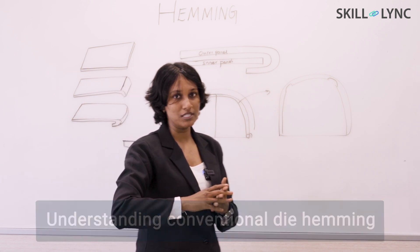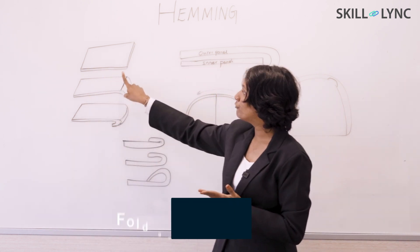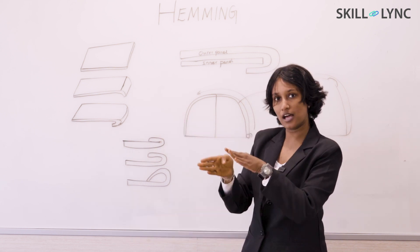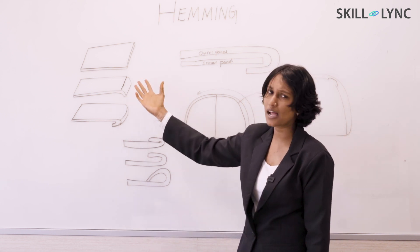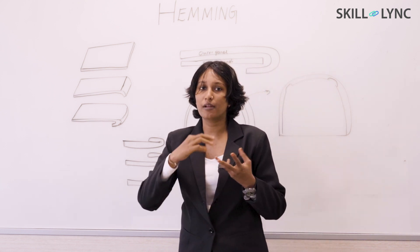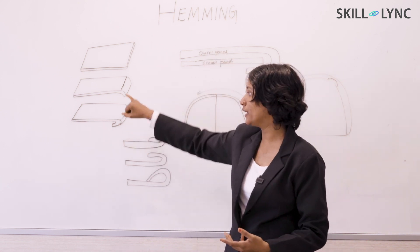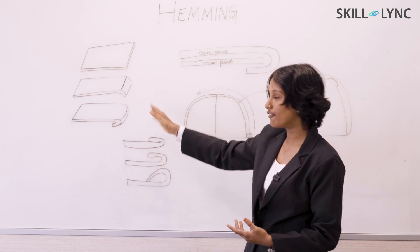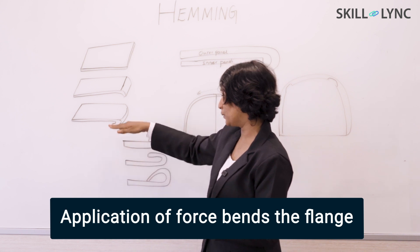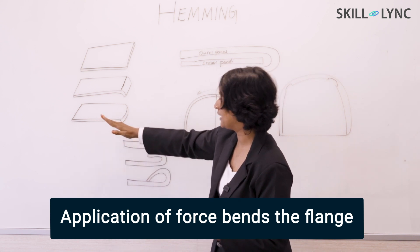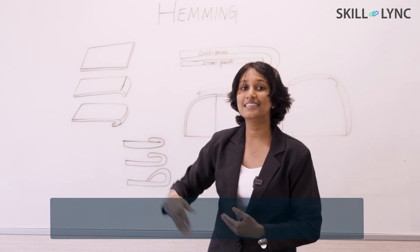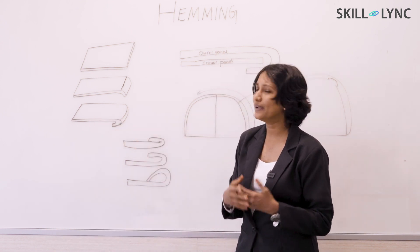With conventional die hemming, what we do is fold the sheet metal to create a flange. This flange can be created depending on the material used — it can be from 30 degrees to 45 degrees. After creating the flange, we apply more force equally so that it can be bent further — the hem is produced. This is the conventional die hemming process.